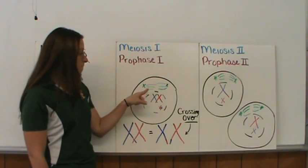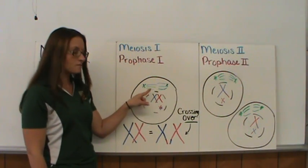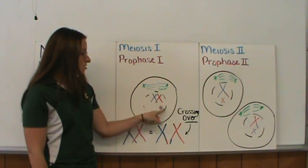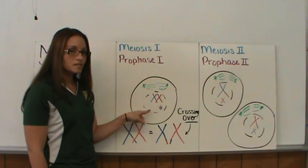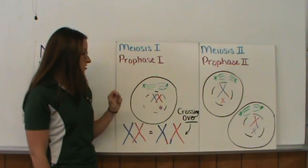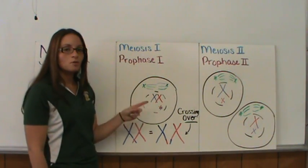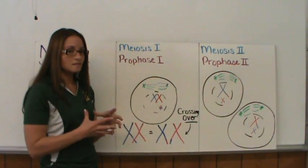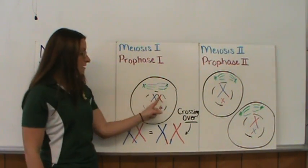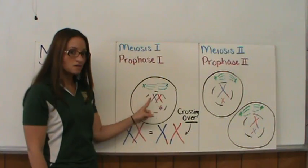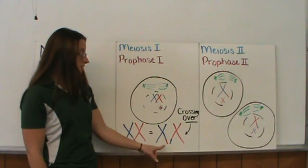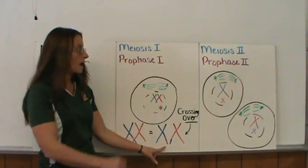So to summarize prophase I: spindle fibers form, the nucleus dissolves, chromosomes condense and pair up with their match, and crossing over can happen.